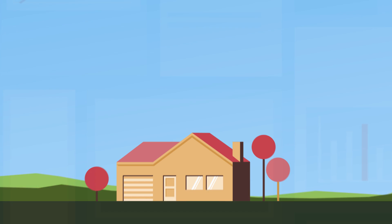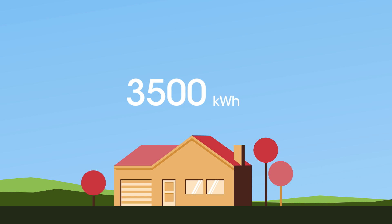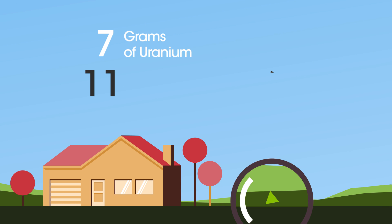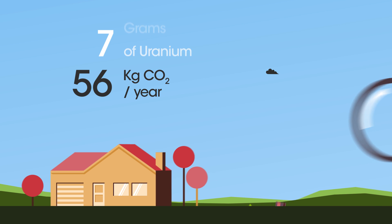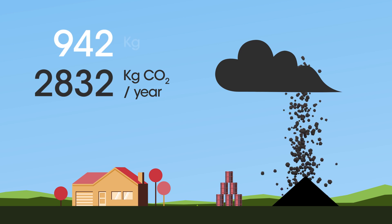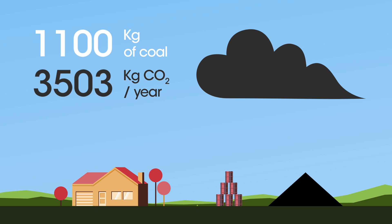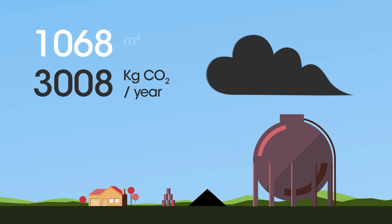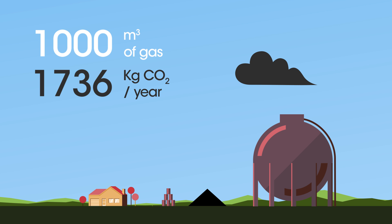Let's look at the facts. To supply an average household for a year, we would need 7 grams of uranium, or 890 kilograms of oil, or 1,100 kilograms of coal, or 1,000 cubic meters of gas.